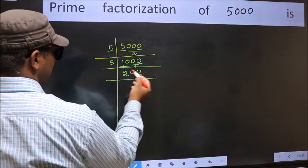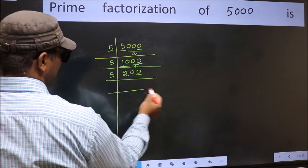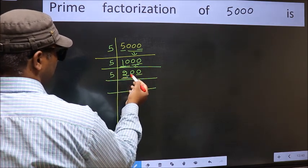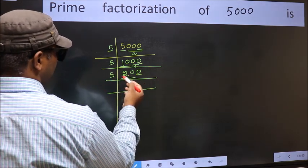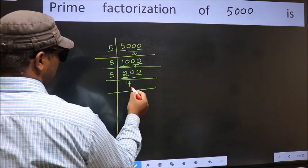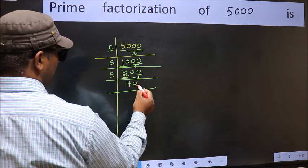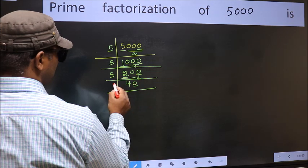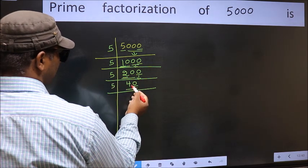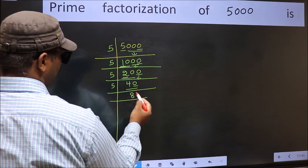Now the last digit is 0, so take 5. The first number 2 is smaller than 5, so take 2 numbers: 20. When do we get 20 in the 5 table? 5 fours are 20. Now this 0 as it is. Last digit is 0, so take 5. When do we get 40 in the 5 table? 5 eights are 40.